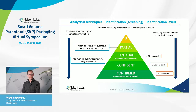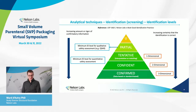Now I want to return to the screening process for organic compounds and discuss identification levels. If you detect a compound with mass spectrometry, how certain are you of its correct identity? Based on USP 1663, we can distinguish five different identification levels, starting from unidentified — where you have no clue about the structure or substructure of your extractable or leachable.